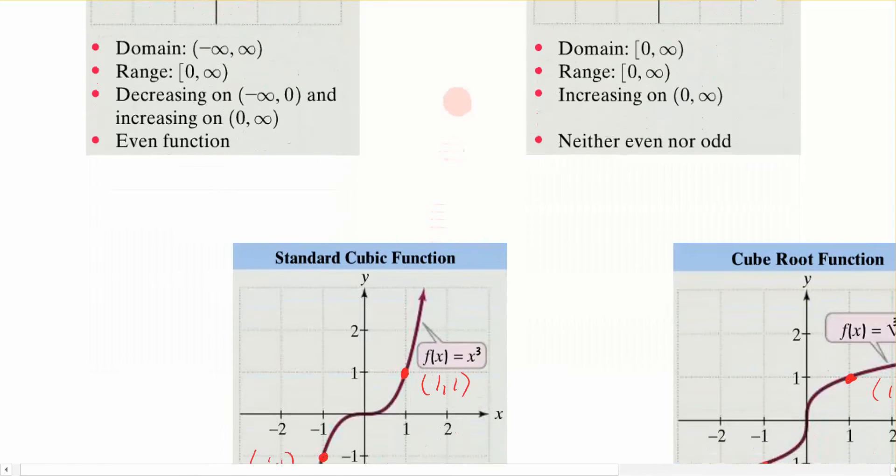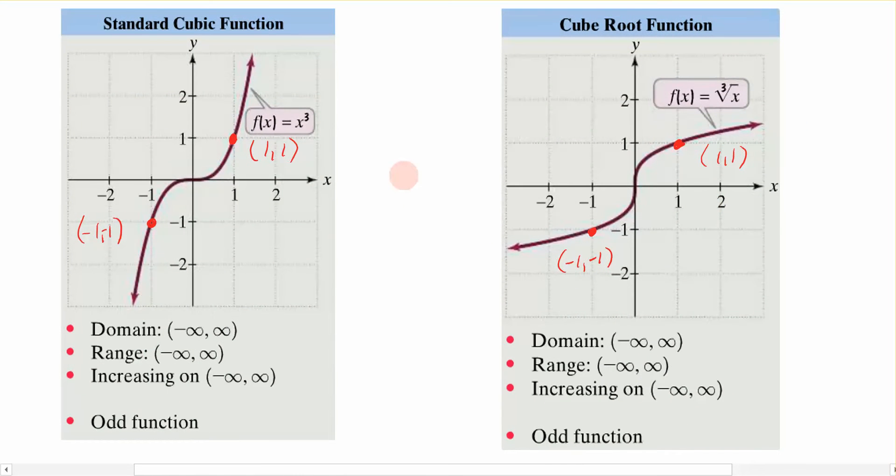Now let's look at the remaining two that we have. We have a cubic function, which is f of x is equal to x cubed. The characteristic of this function would be that it comes up on the left-hand side, it scoots across the origin, and then continues off on the right.